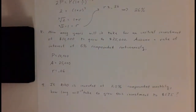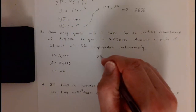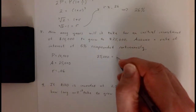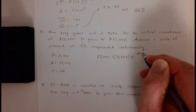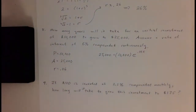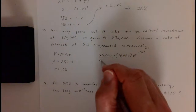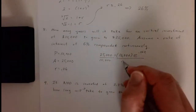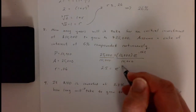We're compounding continuously, so we use the PERT formula. We have: twenty-five thousand equals ten thousand times e to the point zero six T. This is the first time we need to solve an exponential equation where the unknown is part of an exponent. To do that, we isolate the power of e first by dividing both sides by ten thousand, giving us two point five equals e to the point zero six T.